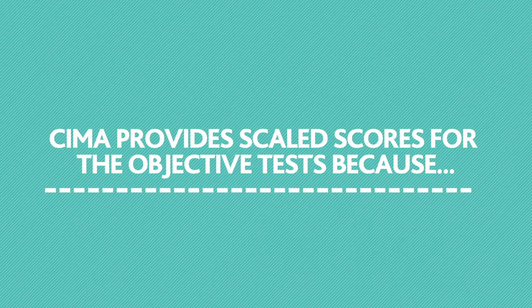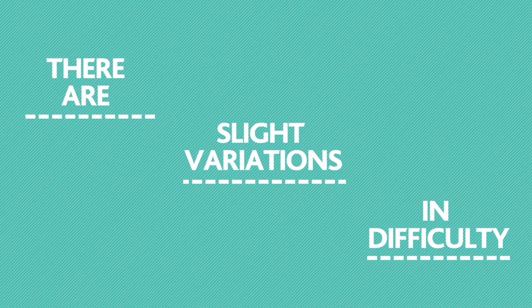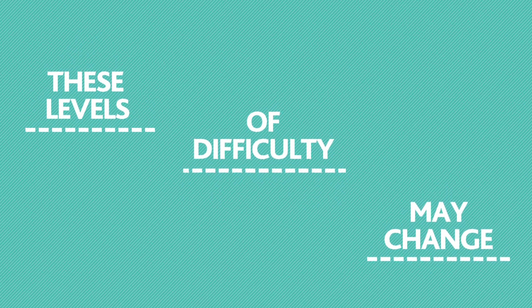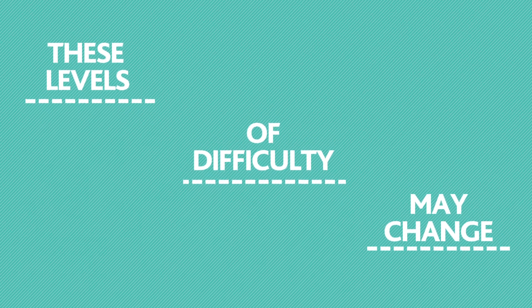CIMA provides scaled scores for the objective tests because there are slight variations in difficulty between versions of the tests, and these levels of difficulty may change slightly over time as the item bank is updated and questions revised. For each version of the test, there are slight variations in challenge and content, meaning the raw score produced across all variants cannot be compared, even if students achieved the same raw score, until they go through an industry standard psychometric process called equating.